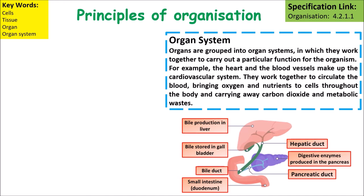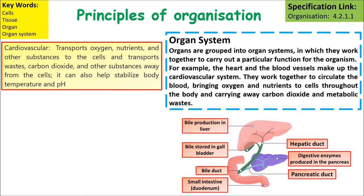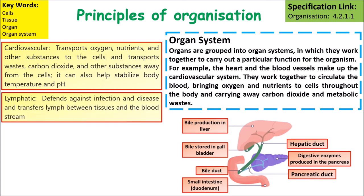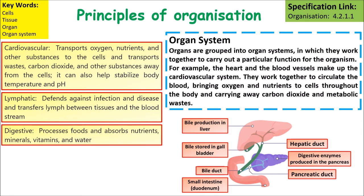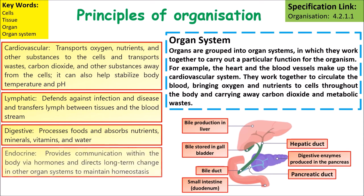Organs are grouped into organ systems, where groups of organs work together. Examples include the cardiovascular system and the digestive system. The cardiovascular system transports oxygen, nutrients, and other substances to cells and removes water, carbon dioxide, and other waste. The lymphatic system defends against infection and transfers lymph between tissues and the bloodstream. The digestive system processes and breaks down food and enables us to absorb it. The endocrine system communicates via hormones, detects long-term changes in other organ systems, and maintains homeostasis.